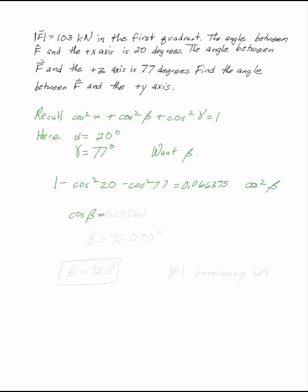Cosine of beta is the square root of that, which is 0.25763, and beta is 75.070 degrees. So that's the answer to the question, beta is 75.0 degrees.